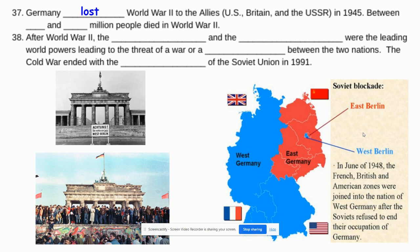Germany lost the Second World War to the Allies, which were the United States, Great Britain, and the Soviet Union or the USSR, in 1945. Somewhere between 40 million to 60 million people died during the course of the Second World War.